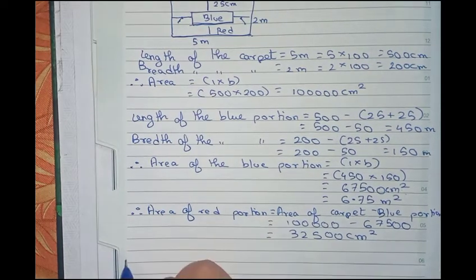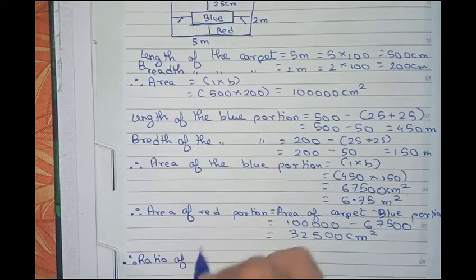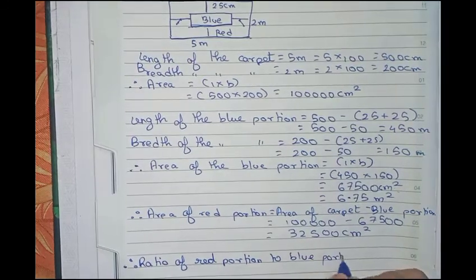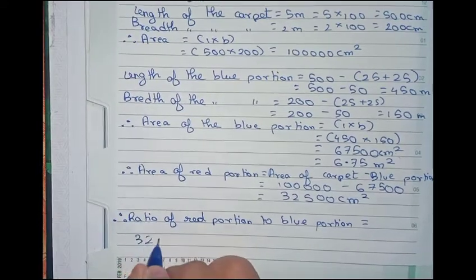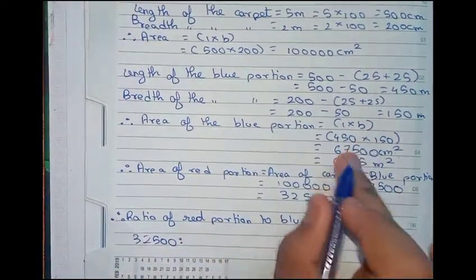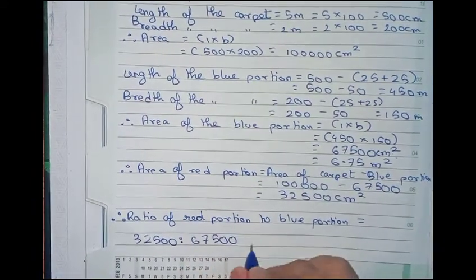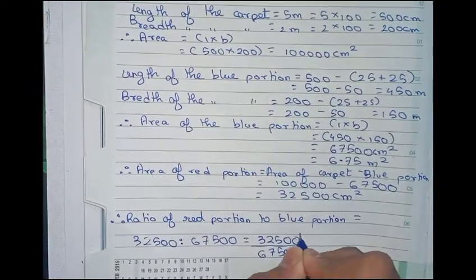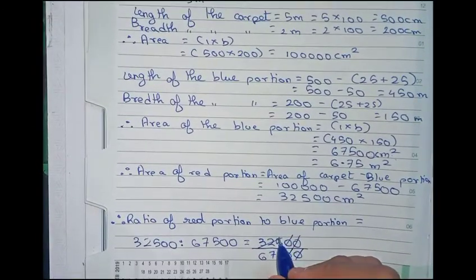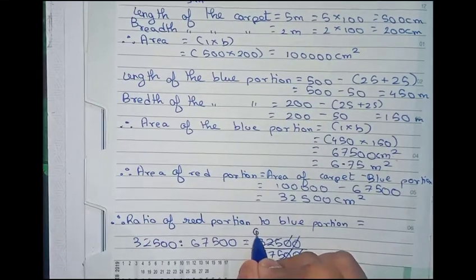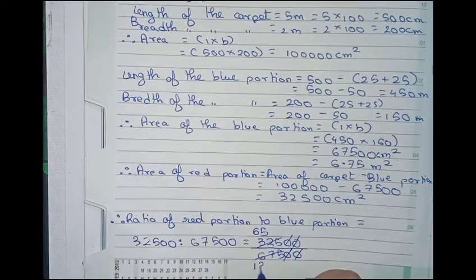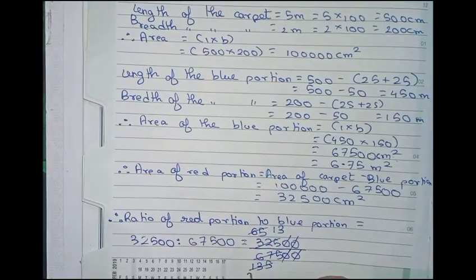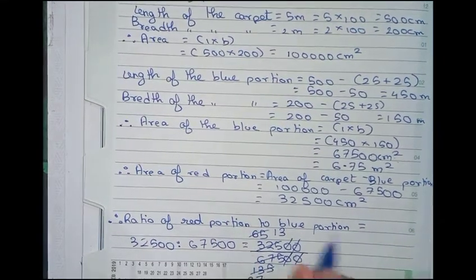Now we find the ratio. Ratio of red portion to blue portion equals 32,500 to 67,500. Writing in fractional form: 32,500 over 67,500. Cancelling zeros and dividing by 5 repeatedly, we get 65 over 135, then 13 over 27. This cannot be further simplified, so the ratio of the red portion to the blue portion is 13 : 27.